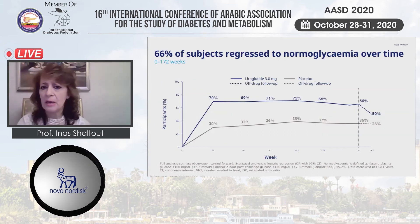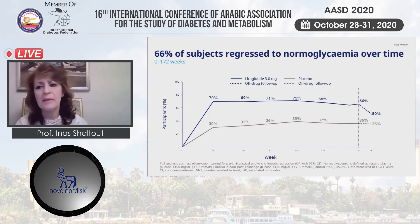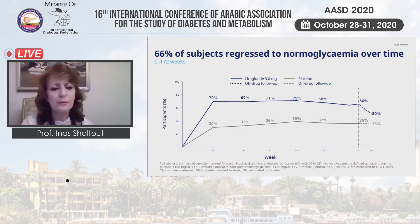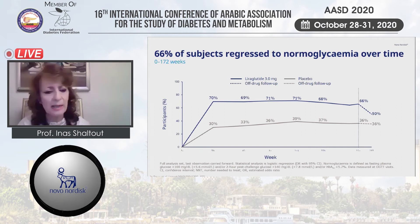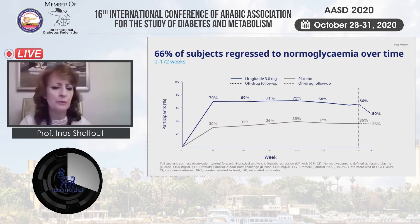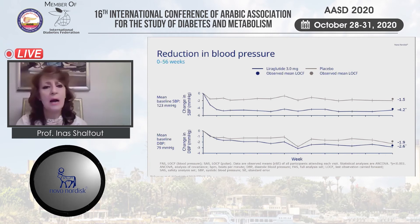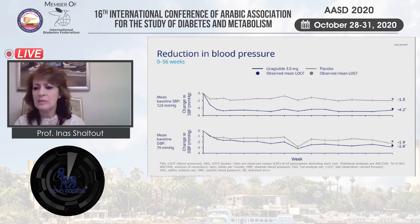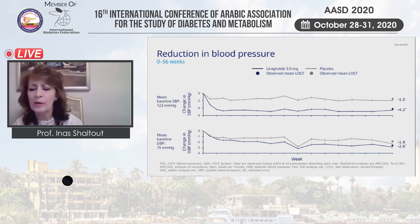60% of subjects with pre-diabetes regressed to normoglycemia over time. This effect was shown even after 28 weeks from the beginning — 70% of cases gained normal glycemia after 28 weeks.